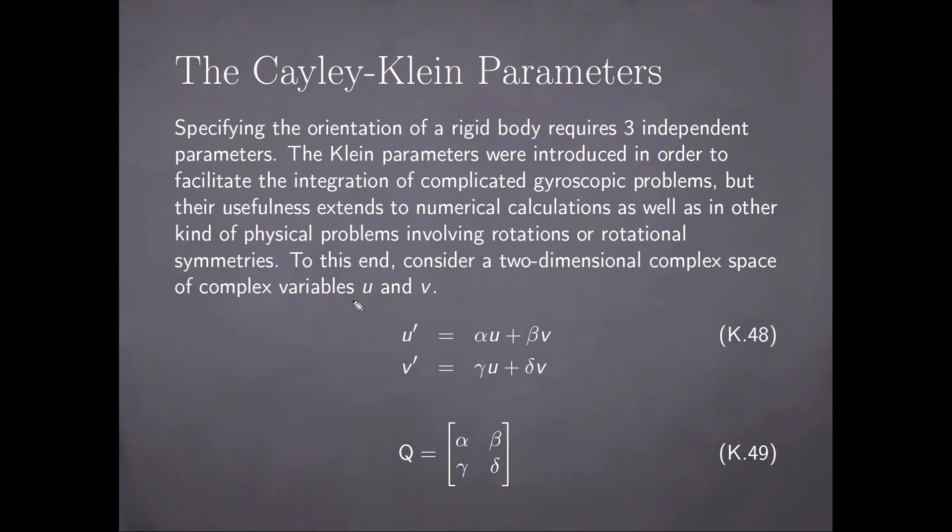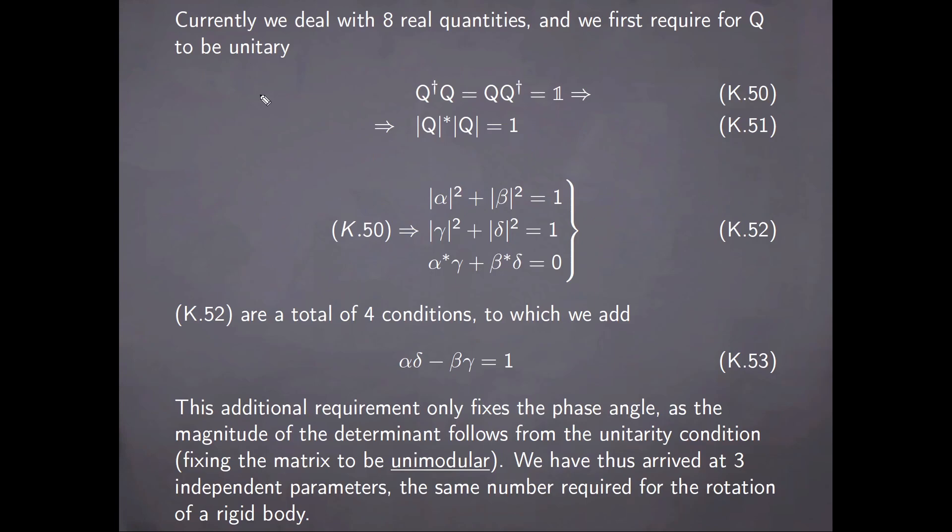When we consider the linear transformations of these variables, from u and v to u prime and v prime, then the coefficients of these transformations can be cast in the form of the matrix Q presented here. Now, due to the fact that this space is complex and the coefficients are complex numbers, currently we deal with eight real quantities. And our first requirement is for Q to be unitary, which is the condition here. And if we take its determinant, this automatically implies this condition as well.